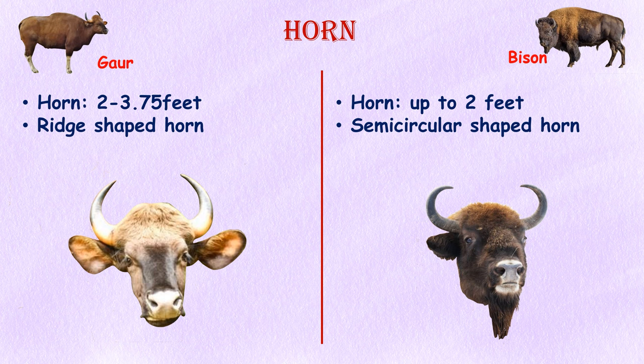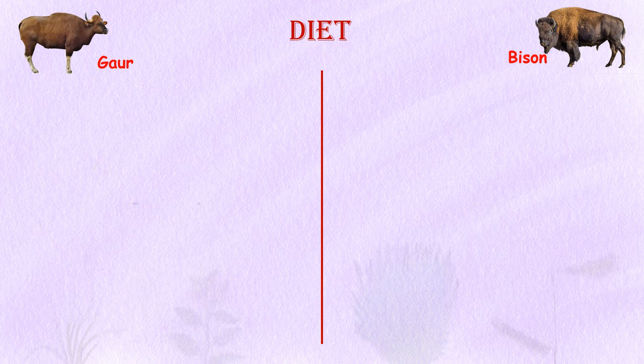Horn: Gaurs have distinctive curving horns that can grow two to three and three-quarter feet long, forming a characteristic ridge-like shape on the head. Both male and female American bison have horns. The bison's horns are shorter and thicker than those of the gaur, growing up to two feet long and curving inward in a semicircular shape.